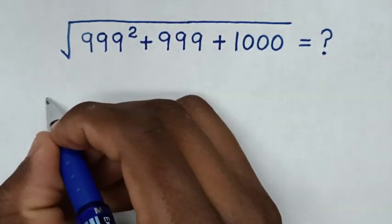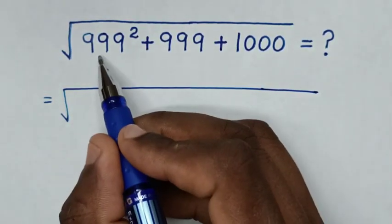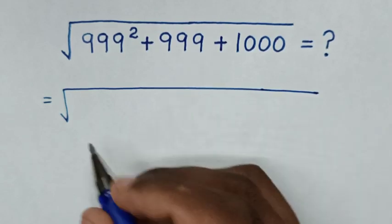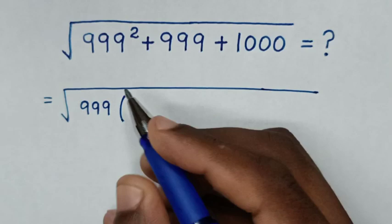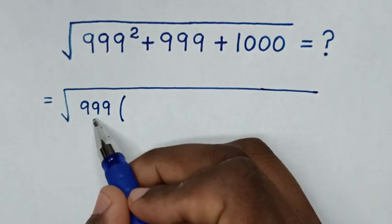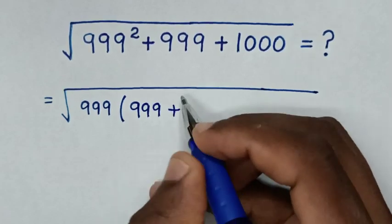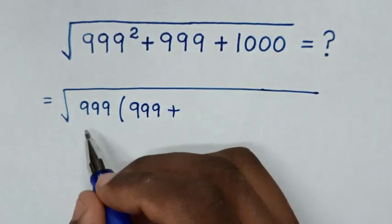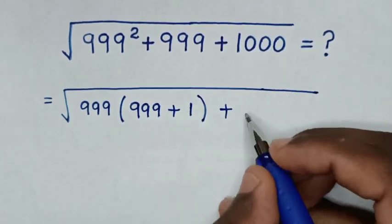So it will be equal to square root. From here 999 is common, so we take 999 out of bracket. Then 999 square divided by 999 is 999, then plus 999 divided by 999 is 1 bracket, plus this 1000.